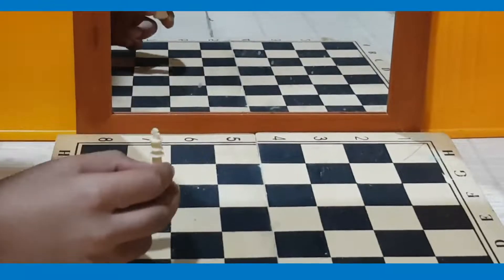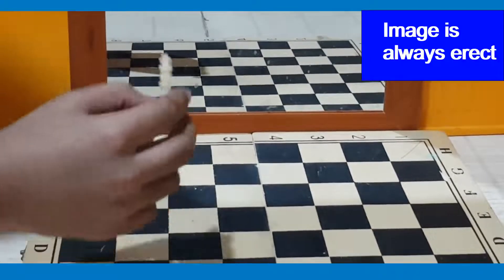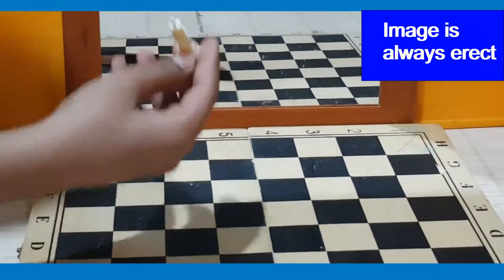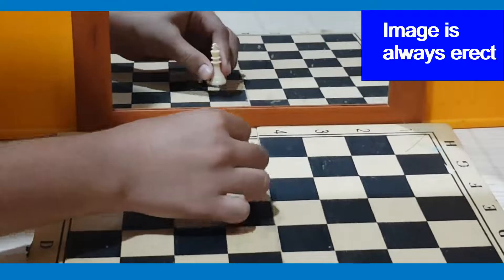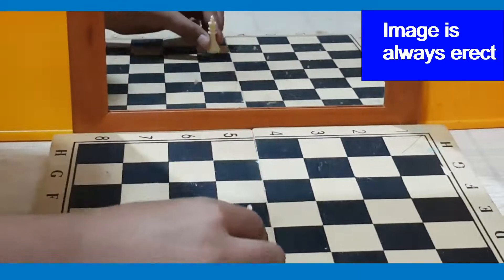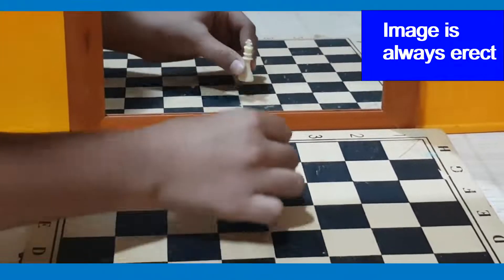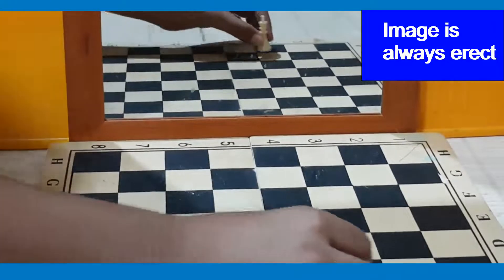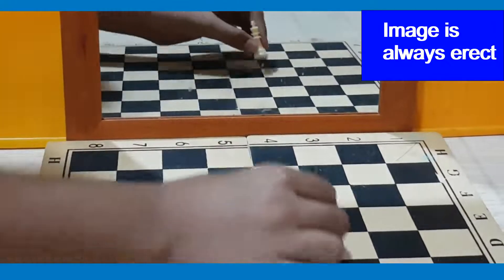The first property that we learnt was that the image formed by a plain mirror is always erect. So as you can see this chess piece no matter where I take it, left, right, front, back, it doesn't become upside down, it is always straight, it is erect.